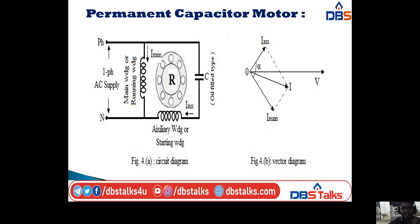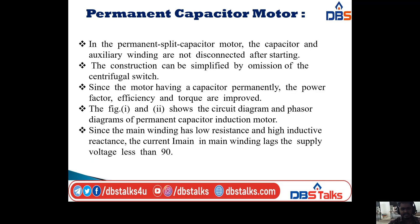In the phasor diagram, I am taking voltage as the reference phase. We have two currents: auxiliary winding current and main winding current. The auxiliary winding current leads the main current at an angle alpha. The combination of auxiliary winding current and main winding current equals the total current. Since the main winding has low resistance and high inductive reactance, the current I_main in the main winding lags the supply voltage by less than 90 degrees.